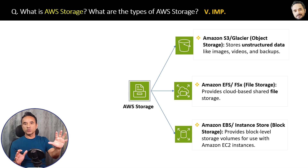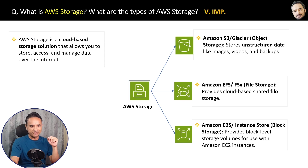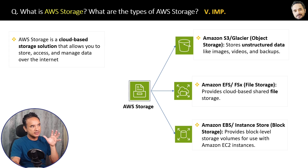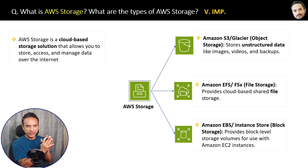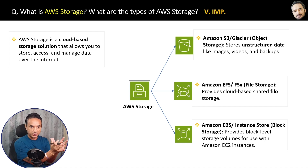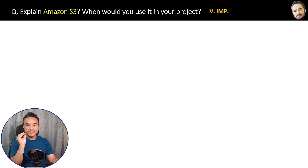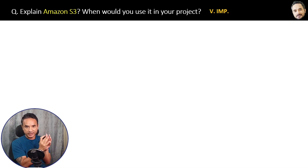Now you know the main types of storage. Here is a simple and easy-to-remember definition: AWS storage is a cloud-based storage solution that allows you to store, access, and manage data over the internet safely and reliably. I hope this diagram and definition in this book will help you in doing a quick revision before your interviews.